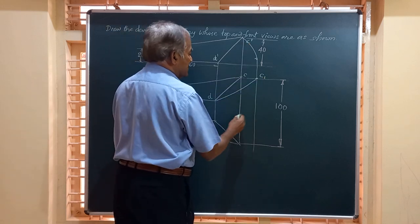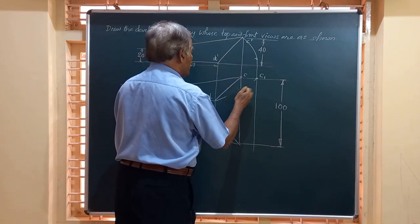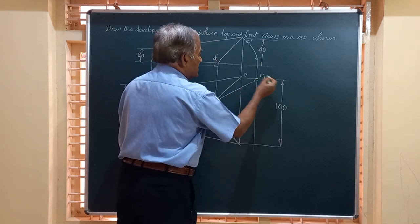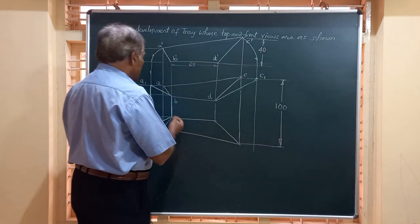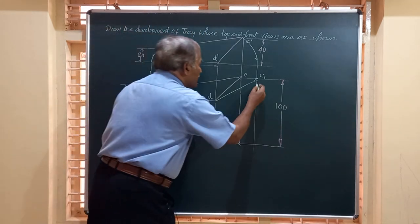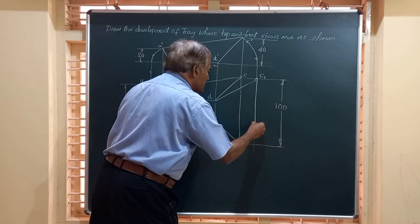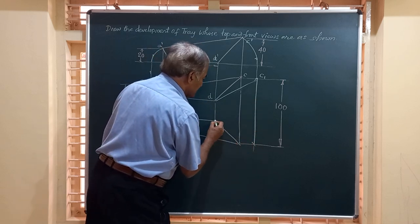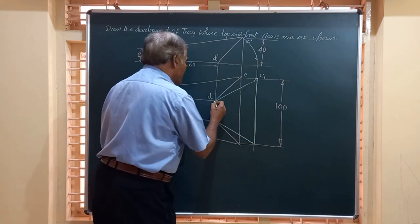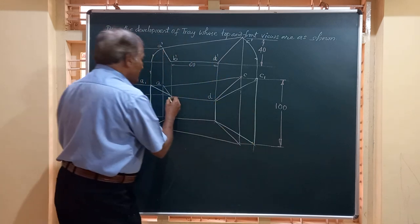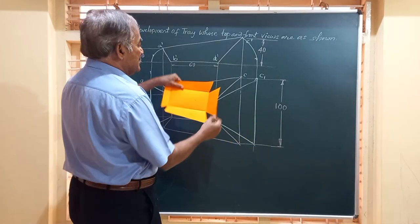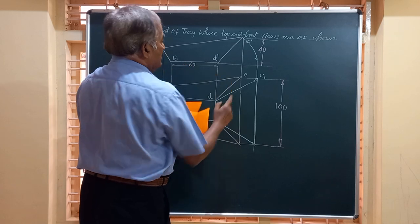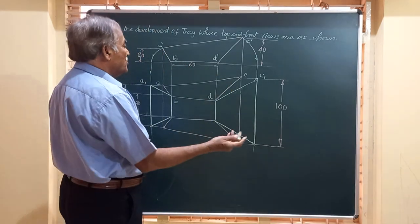This gives us C1. Similarly, extending a line downwards from there until it meets the locus of this point — joining that gives us the development of the second half, which is the bigger part. This is looking like a trapezium, as I told you in the beginning of the video.